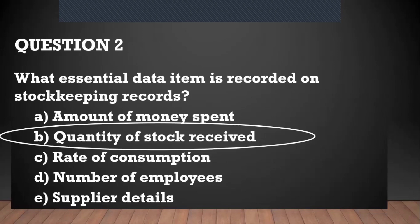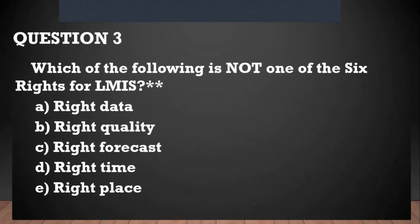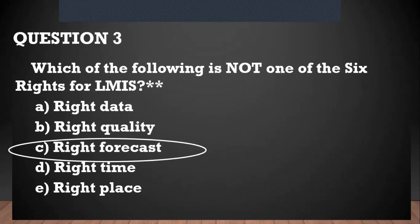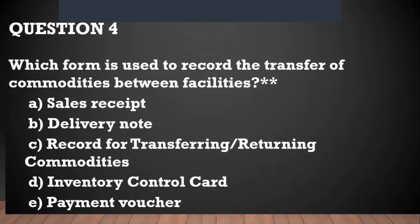Question number three is a negative question: which of the following is not one of the six rights for the LMIS? You have right data, right quality, right forecast, right time, right place. Right forecast looks out of place. Question number four: which form is used to record the transfer of commodities between facilities?